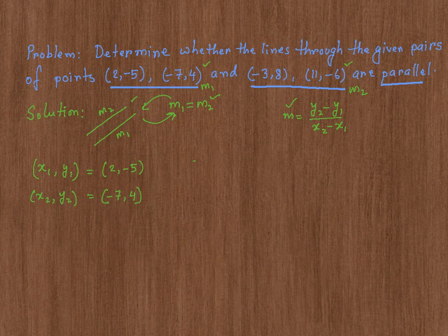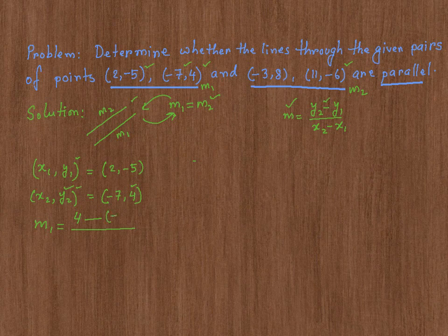I have labeled this point as X1, Y1 and this point as X2, Y2. My first slope M1 is going to be Y2, which is 4, minus Y1, which is negative 5 — I need to put it inside the parentheses to avoid any confusion. My X2 is negative 7, minus X1, which is 2.